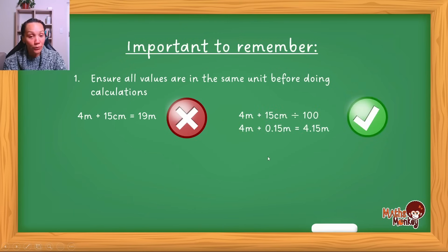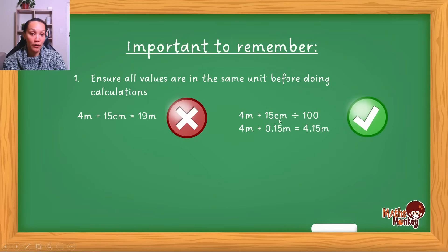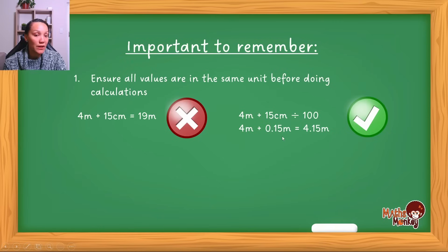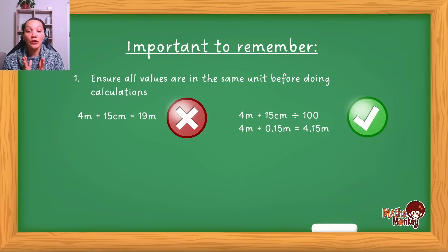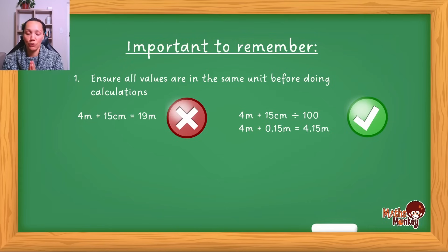The correct way to do this is to convert one of the units to another. In this example, we've got 15 centimeters which we convert to meters — that's 0.15 — and then you add these two together to give you 4.15 meters. So when you're doing questions, please do not do any calculations if all the values are not in the same unit.